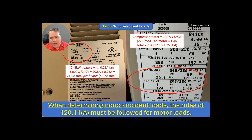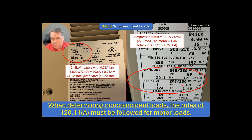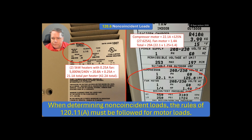Over here on the right, my compressor motor is 22.1 — that's the running load amps. I've also got a fan motor as part of that equipment, which is a quarter horsepower, so it pulls 1.4 amps. I'm going to take the larger of those two times 125%, which of course is going to be the compressor. So 22.1 × 125% is 27.6. On top of that, I'm going to add my 1.4, and that's going to be a total of 29 amps. So that's my air conditioning.